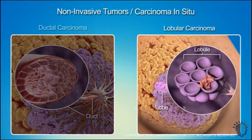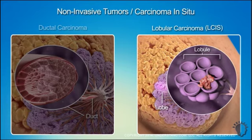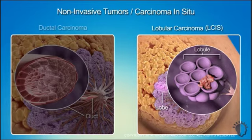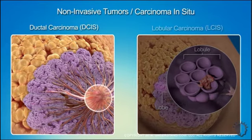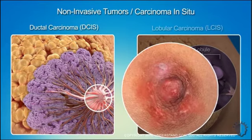Lobular carcinoma in situ is often referred to as LCIS or lobular neoplasia. Although LCIS has the word carcinoma in it, it has a low risk of progressing to invasive disease. It's commonly thought of as a risk factor for developing breast cancer, and the risk can be in either breast. Ductal carcinoma in situ, DCIS, carries a much higher risk and, if untreated, could become an invasive form of cancer. A rare form of DCIS called Paget's disease involves the ductal tissue beneath the nipple and areola.